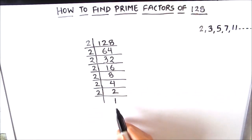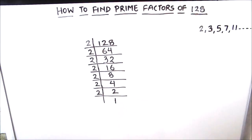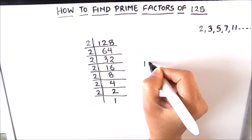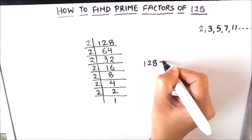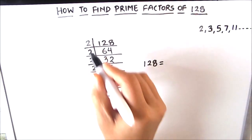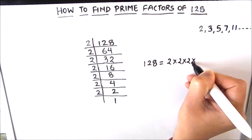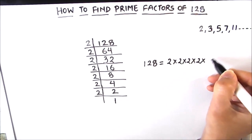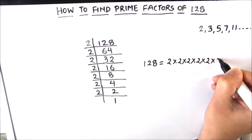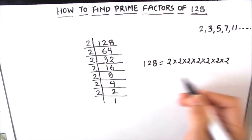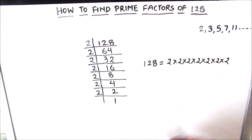Now we got the quotient as 1, which means we have divided the number fully. All the divisors are the prime factors of 128. So we can write 128 as the product of its prime factors: 2 × 2 × 2 × 2 × 2 × 2 × 2. This is how we can find the prime factors of any number using the prime factorization method.